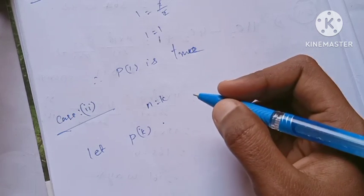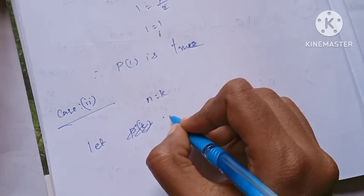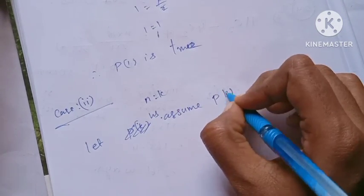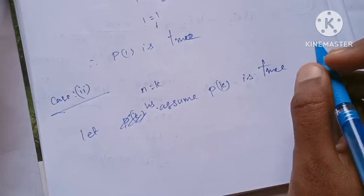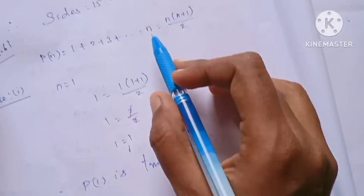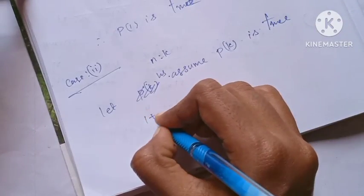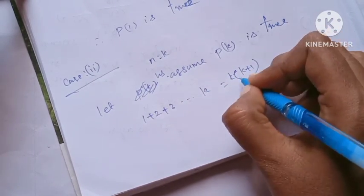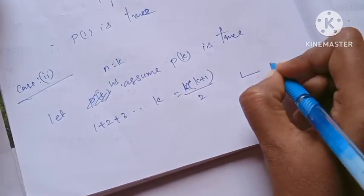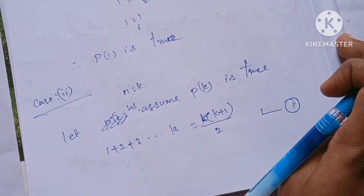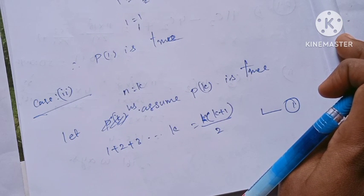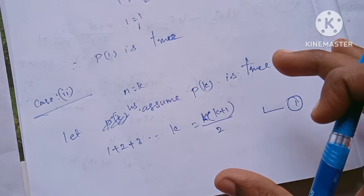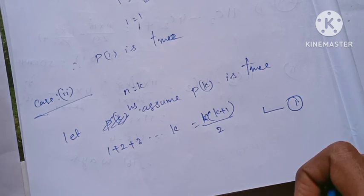For Case 2, we assume P(k) is true. That is, we assume 1 plus 2 plus up to k is equal to k(k+1)/2 — this is Equation 1. The reason is: we substitute n equals 1 (proven true), then substitute n equals k.